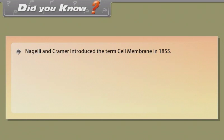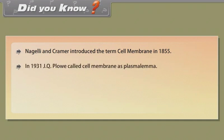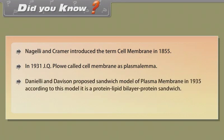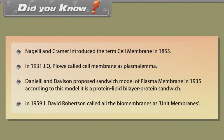Did you know: Nageli and Kramer introduced the term cell membrane in 1855. In 1931, J.Q. Plowe called the cell membrane as plasmalemma. Danielli and Davson proposed the sandwich model of plasma membrane in 1935; according to this model, it is a protein-lipid bilayer-protein sandwich. In 1959, J. David Robertson called all biomembranes as unit membranes.